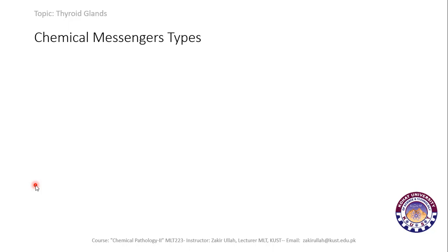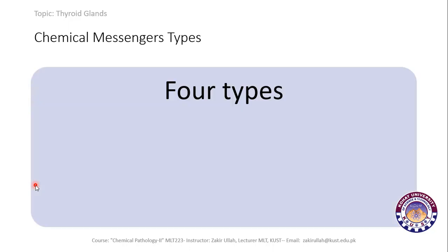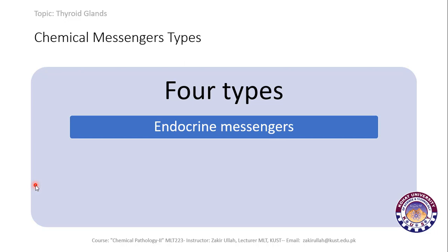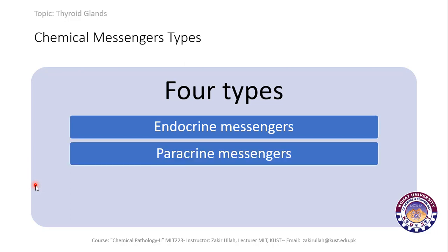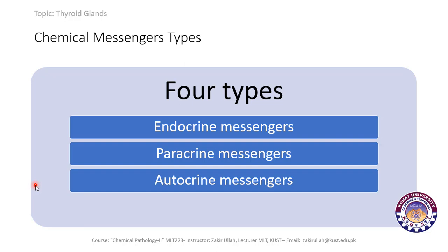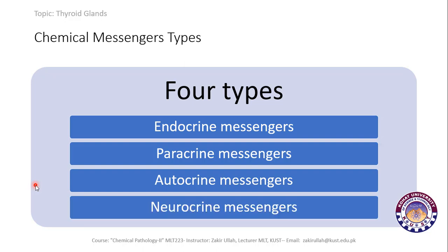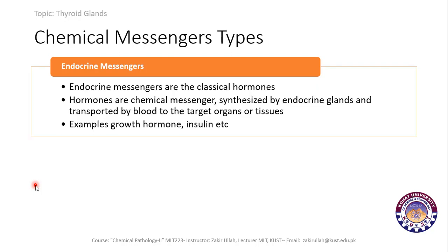There are four types of chemical messengers. The first type is the endocrine messenger, generally known as hormones — these are the classical hormones synthesized by the endocrine glands and transported to the target tissues or target organs by the blood.